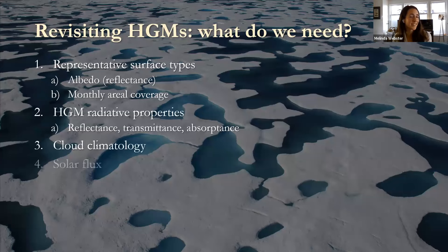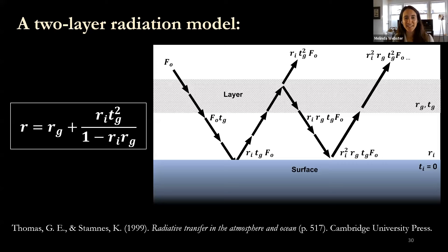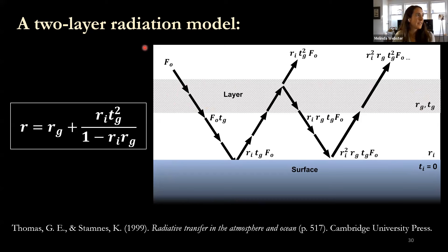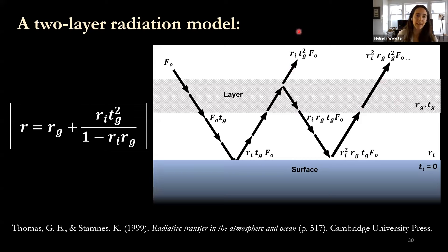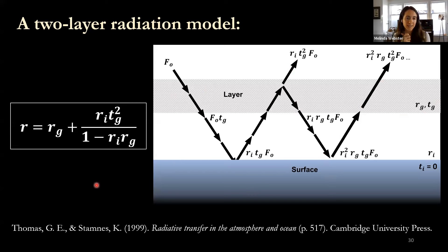Now the simple two-layer radiative transfer model. This is a way to calculate what happens to solar fluxes scattered between two surfaces — a layer on top and the underlying surface. Sunlight comes down and reaches the surface, but as it goes through the HGM layer, some gets backscattered toward the surface, some gets transmitted through, and so on. This can be elegantly summarized in an equation where G represents the layer and I represents the surface.